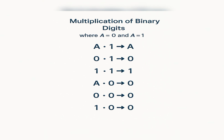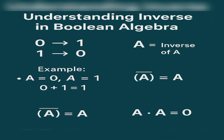Now let's learn the concept of inverse in Boolean algebra. Consider a low value — the opposite of a low value is a high value. We already know zero represents low value and one represents high value. So the inverse of zero is one. When we have one binary digit called a, its inverse is called a-bar. A bar on any variable represents the inverse value in Boolean algebra.